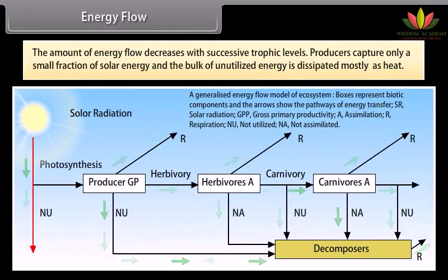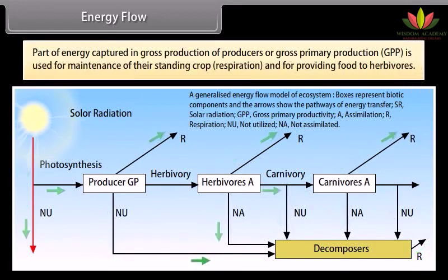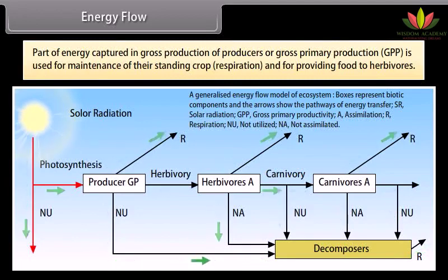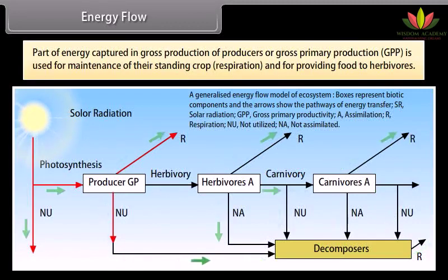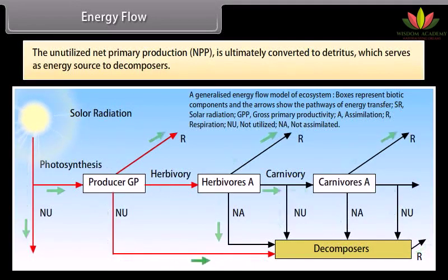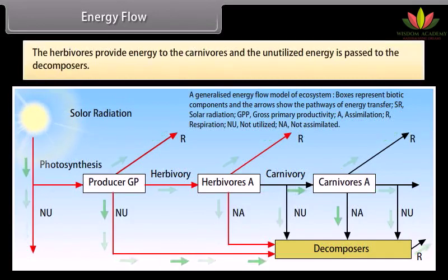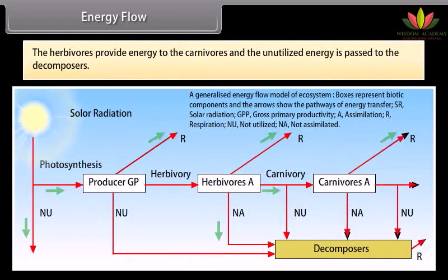Producers capture only a small fraction of solar energy and the bulk of unutilized energy is dissipated mostly as heat. Part of the energy captured in gross primary production (GPP) is used for maintenance of their standing crop, respiration, and for providing food to herbivores. The unutilized net primary production (NPP) is ultimately converted to detritus, serving as energy source to decomposers. The herbivores provide energy to the carnivores, and the unutilized energy is passed to the decomposers.